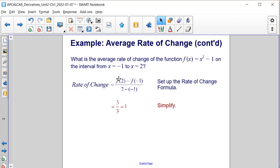Next, we evaluate and simplify. If we substitute 2 for x in our function, we get 4 minus 1, which is 3. If we substitute negative 1 in there, negative 1 squared is 1, and 1 minus 1 is 0. So you get 3 divided by 2 minus negative 1 is 3. And then when we divide, we get 1.